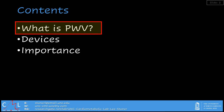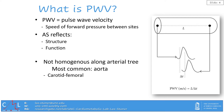So let's start by questioning what is pulse wave velocity. Simply put, it is the speed of the forward pressure wave between two sites. This speed is dependent on both the structure and function of the arteries in question. Of note, the structure of a given artery is different throughout the vascular tree.